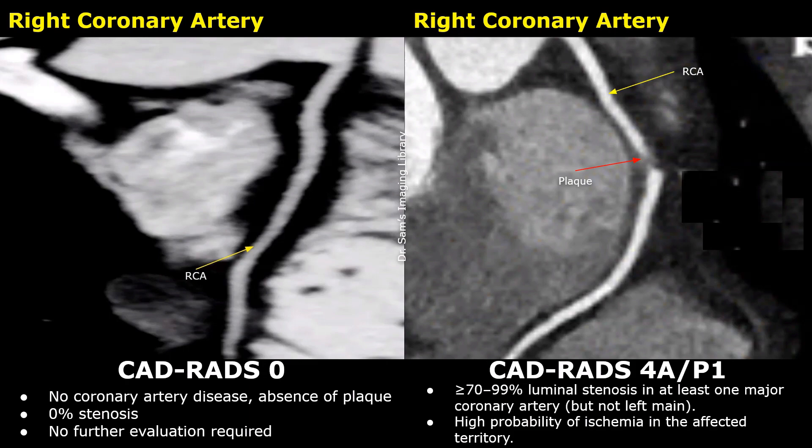Plaque burden is P1 because only one artery has plaque. CADRADS-4A is a serious condition. There is high probability of ischemia in the affected region of the heart.